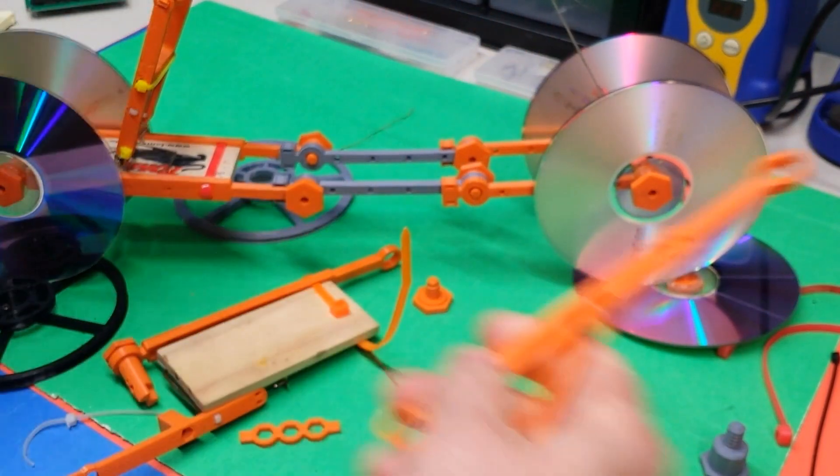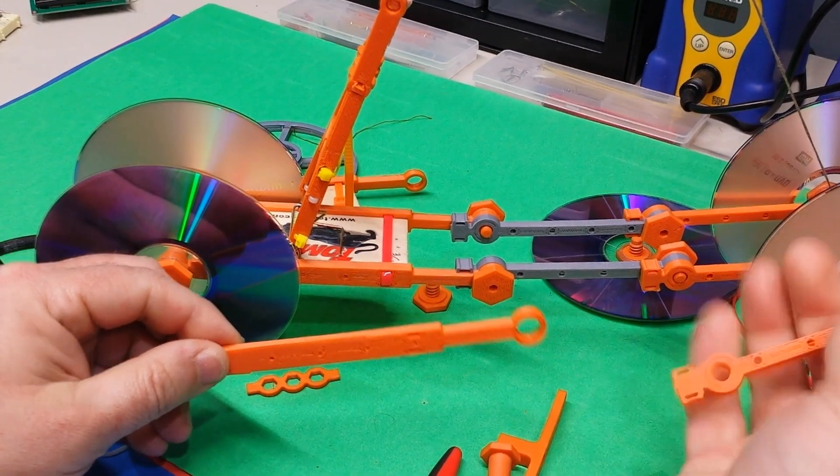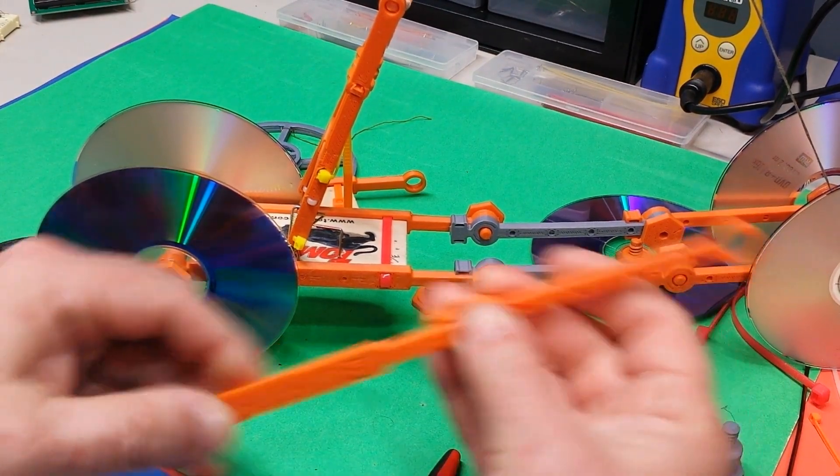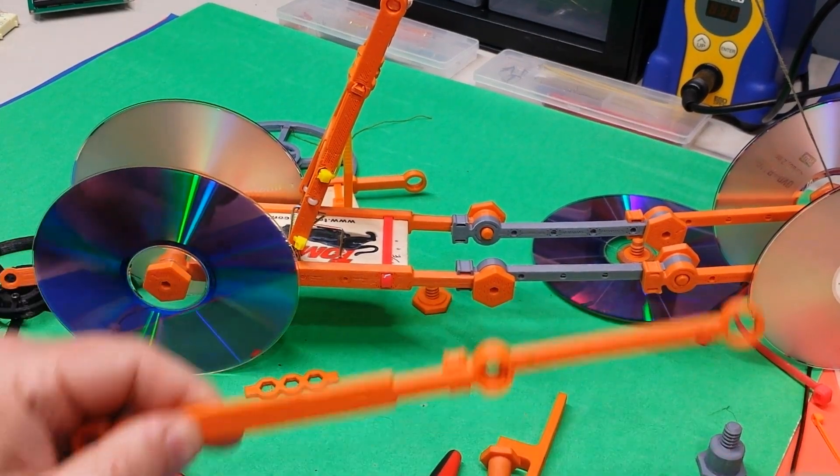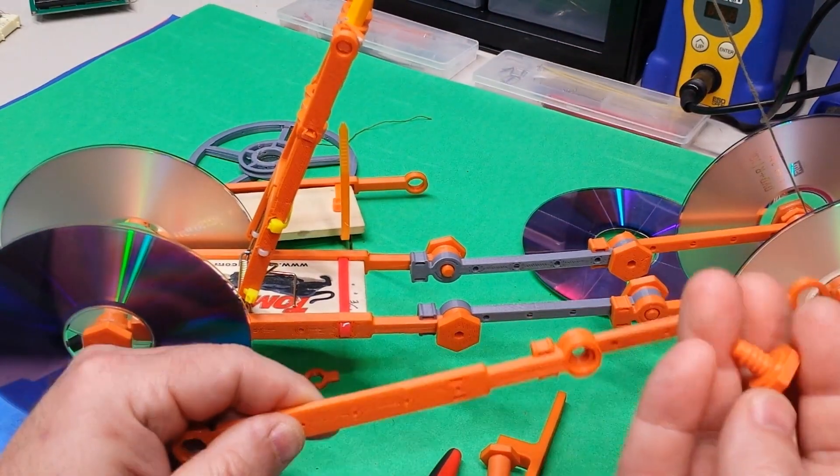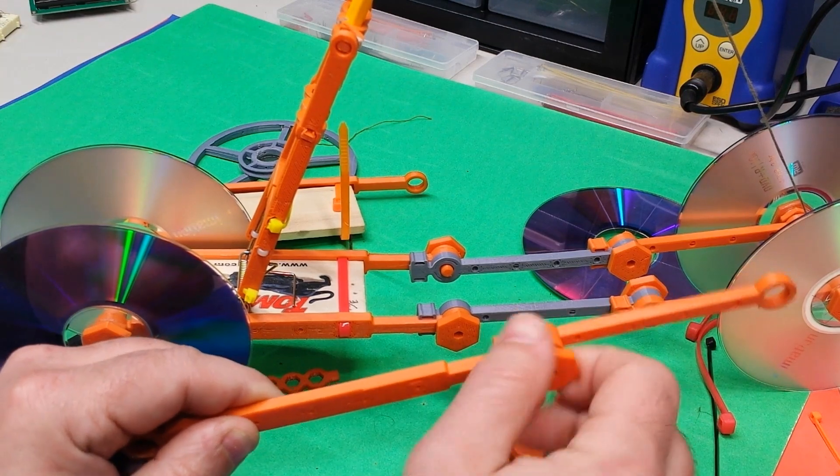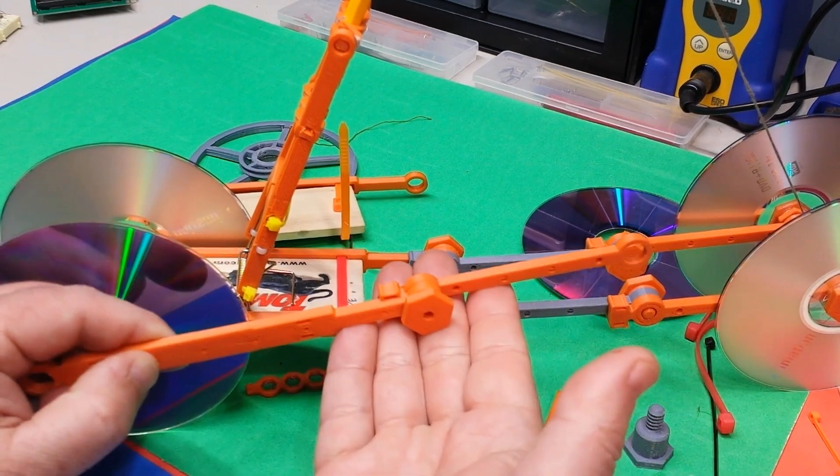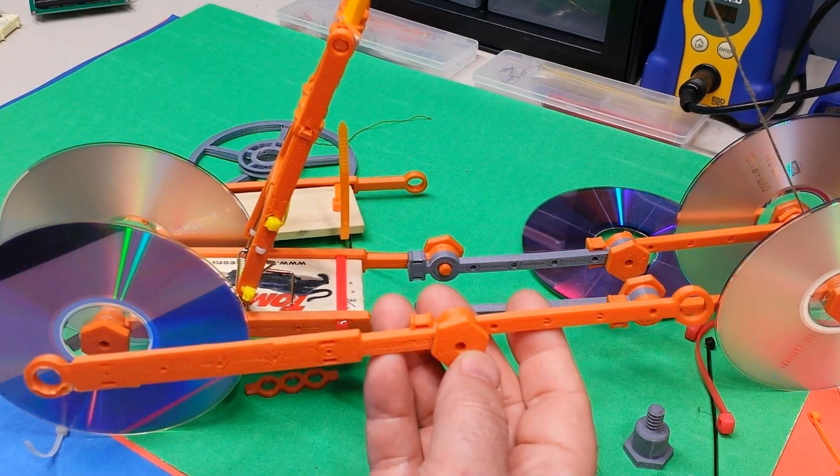The way the extension works, and you can see it in the background, is the extension snaps on to either your strut or another extension. I can put another extension right here and then you print some extra wheel lugs to fasten the extension. That's it. Now you can make the car as long or short as you want. You can have speed races or whatever you determine.